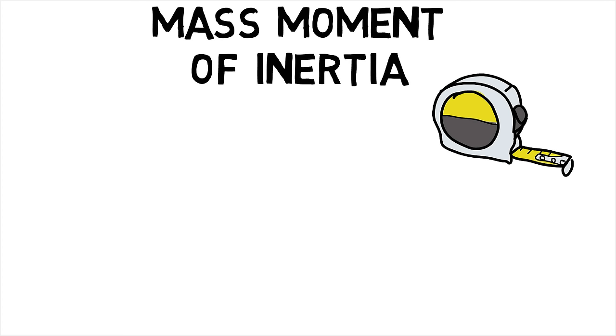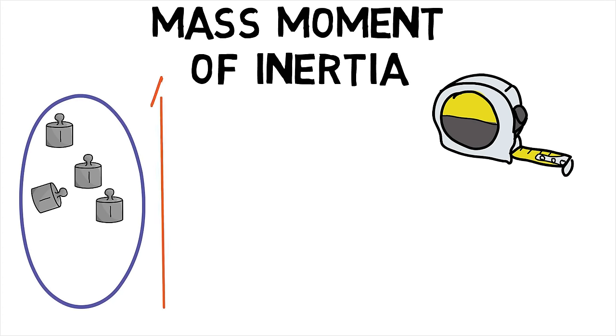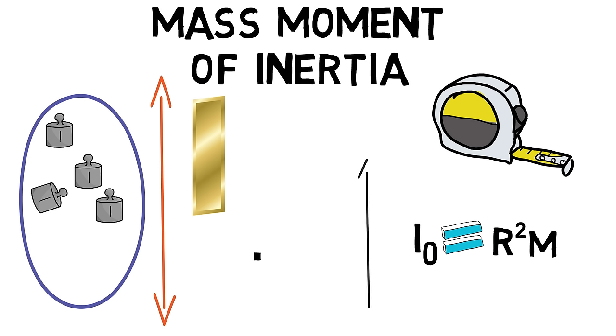The mass moment of inertia is a measure of the distribution of the mass of an object relative to a given axis. The mass moment of inertia is denoted by I and is given for a single particle of mass m as I₀ equals R squared m, where line OO is the axis around which one is evaluating the mass moment of inertia and R is a perpendicular distance between the mass and the axis OO.